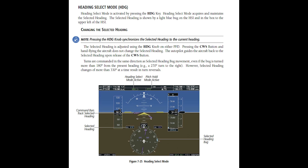Approaching a flyby waypoint can also be achieved by putting the autopilot in heading mode and flying past the waypoint. These functionalities are available on the Garmin G1000, 3000, and 5000 systems.